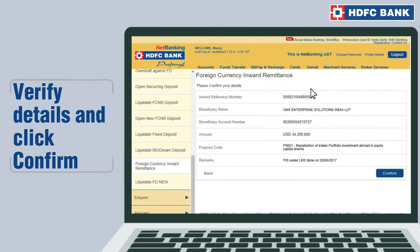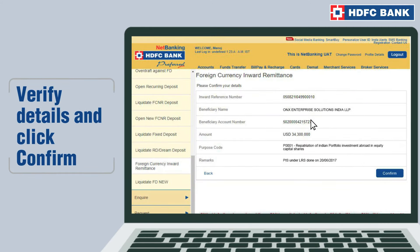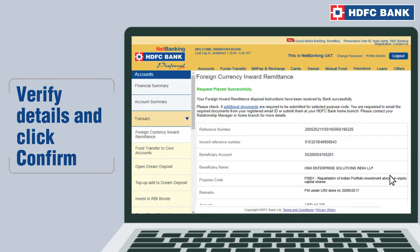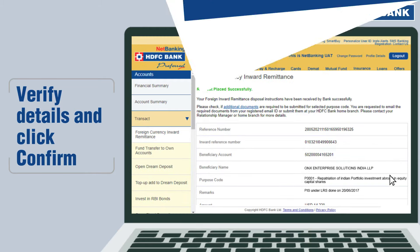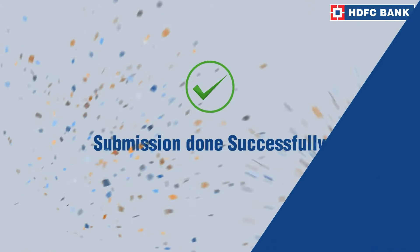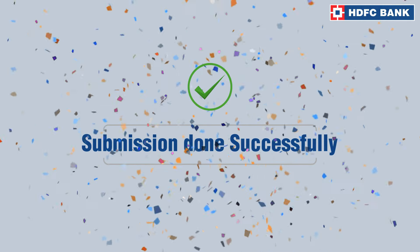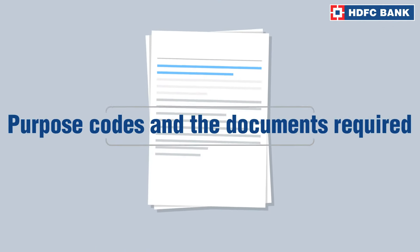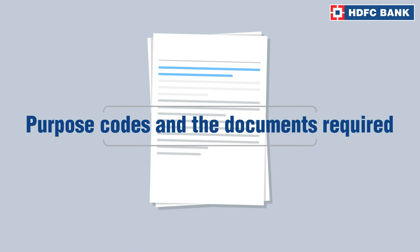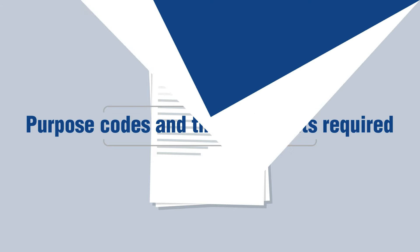In the following page, carefully go through the details of the transaction and confirm. And just like that, in a few simple steps, you would have provided disposal instructions to the bank successfully. In some cases, additional documents may need to be sent to the home branch. Click on Additional Documents to find a list of purpose codes along with the relevant document required.